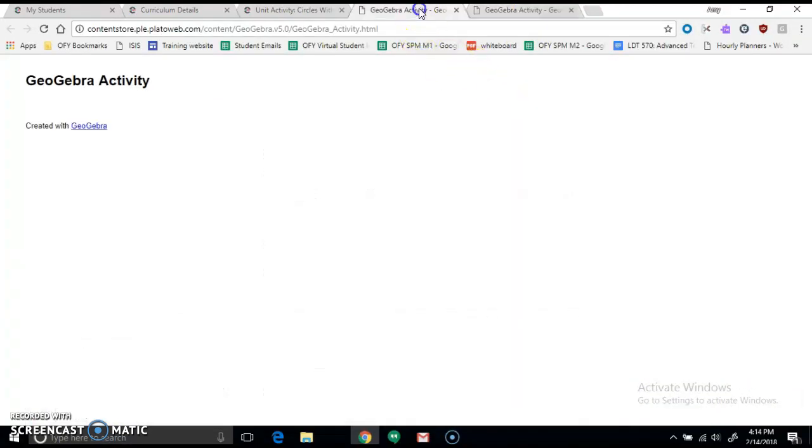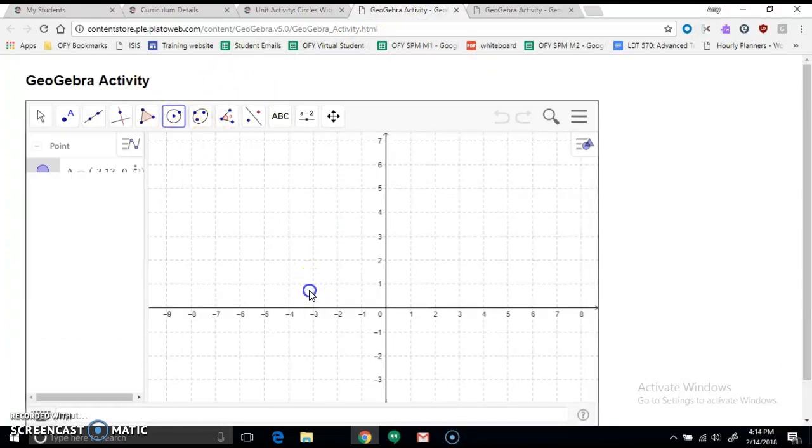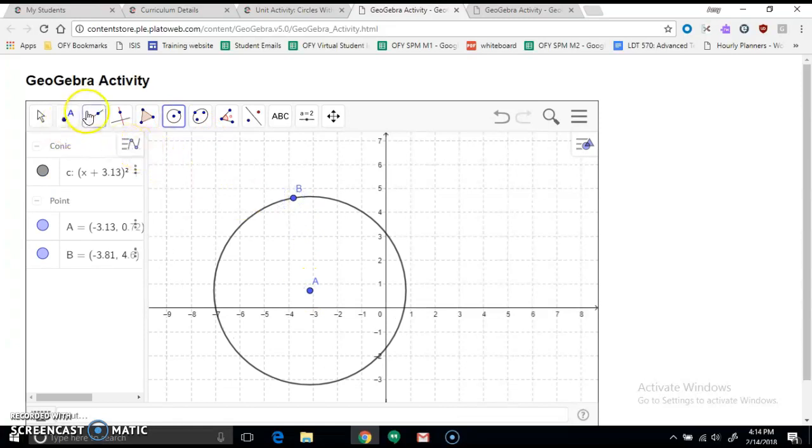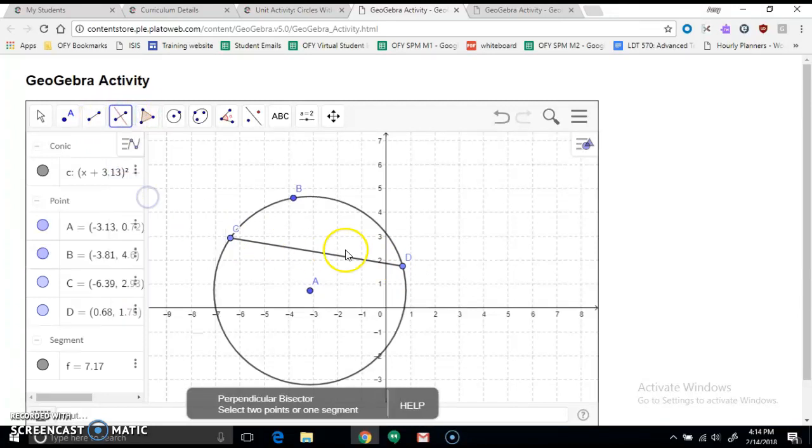So we're basically going to do the exact same thing here. We're going to draw a circle. We're going to make a chord. And then we're going to make a radius that is the perpendicular bisector.